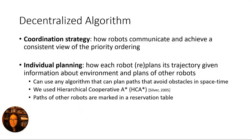How can planning be done in a decentralized manner so that computation can be done on board each robot? We can consider the algorithm at two levels: firstly, how do the robots coordinate with each other and exchange their priorities? And secondly, how does each plan its own trajectory using knowledge about the environment and the plans it has received from other robots?